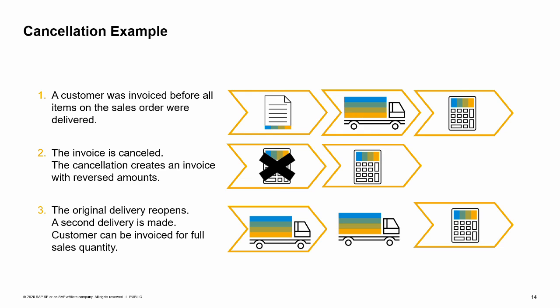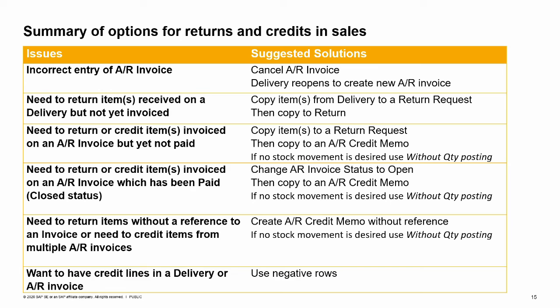Here is a summary of options for returns and exchanges in sales. For incorrect entry of an AR invoice, you can cancel the document; the related delivery will reopen so you can create a new AR invoice. The same is true for an incorrectly entered delivery. If you need to return items received on a delivery that is not yet invoiced, copy to a return request — the system will automatically suggest copying to a return. If items have been invoiced but not yet paid, copy to a return request and the system will suggest copying to an AR credit memo. Once an invoice has been paid, you must first change the document status to open before creating an AR credit memo. You cannot copy from multiple invoices to create a credit memo; if you want to include credit rows in a delivery or AR invoice, use negative rows. The use of negative rows is covered in detail in the topic Returns and Exchanges.